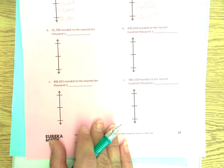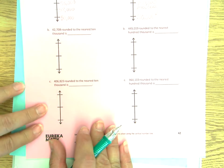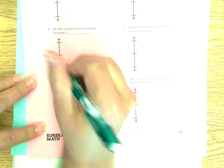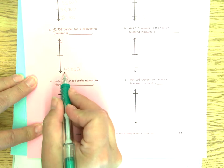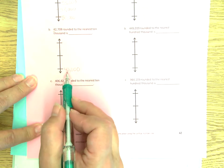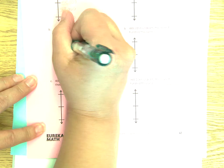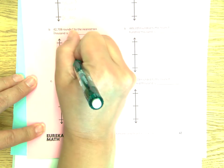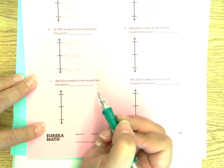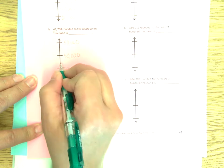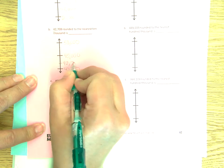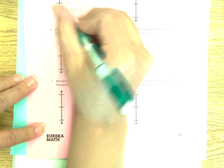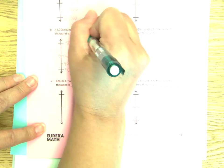Letter B: 42,708 — round it to the nearest 10,000. I'm underlining that place value; you don't have to, but it helps me. I'm going to put 40,000 with all zeros at the bottom. Nearest 10,000: 40,000, and 50,000 would be my next 10,000. In between the two would be 45,000 — we put a 5 in the next place value. 42,708 would be right out here, so would we round that up or round that down? That one would also round down to 40,000.